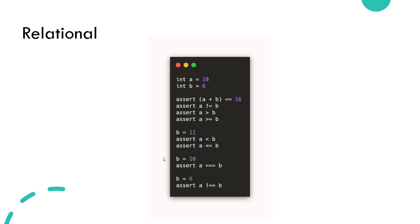Next, we will see about relational operators, where you will be able to compare two variables like less than, greater than, or equals, etc. The assert keyword will help you to get the output of a particular statement. If it is passing, it will not throw any error, but if there is a failure, it will throw an exception in the console.